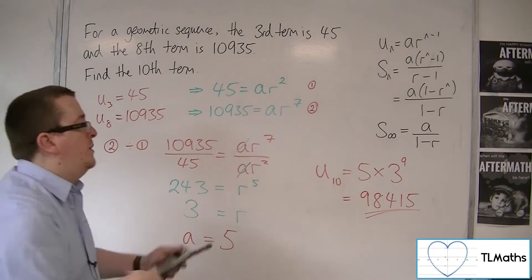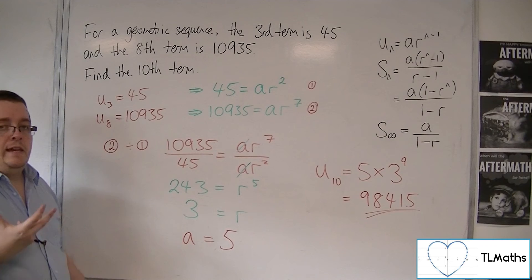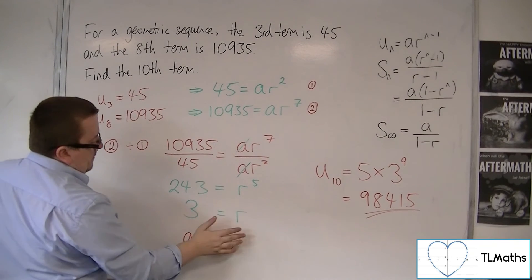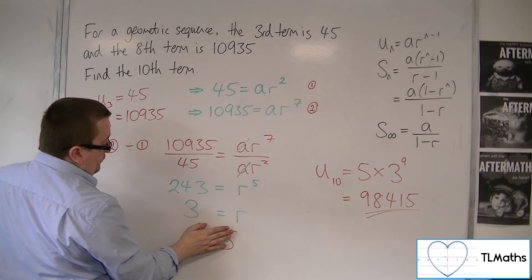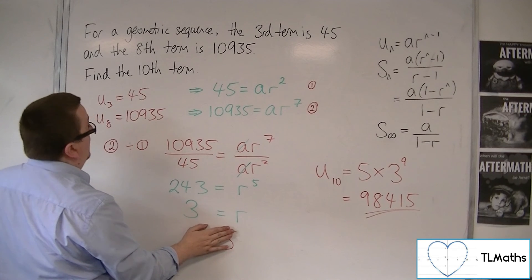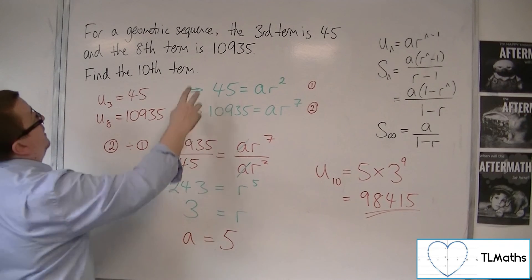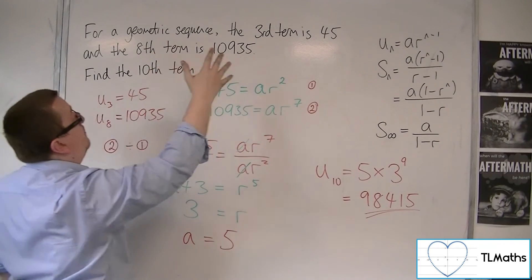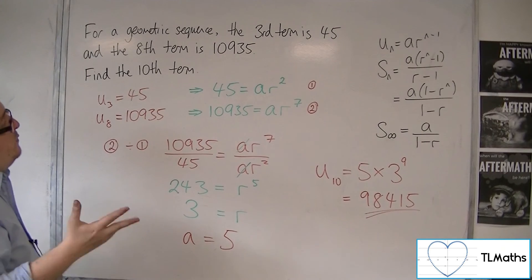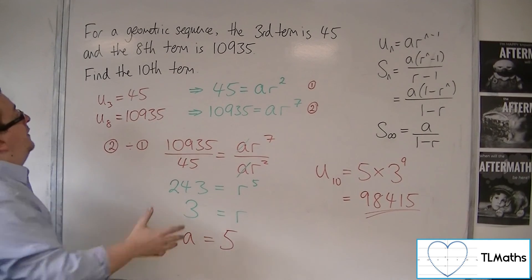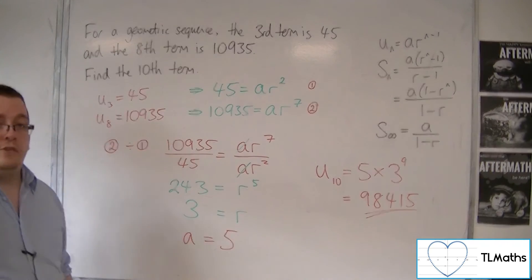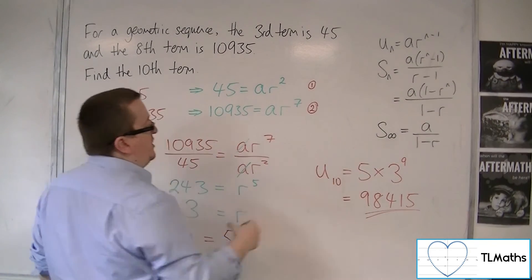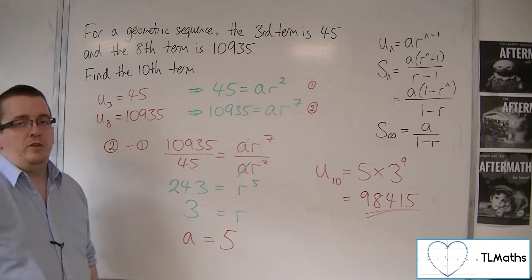Now, you might be wondering, did I need to find A in order to find the 10th term? Well, no, I don't. Because if I didn't find A and I just had R, then I could multiply this by 3 to get the 9th term. And then I could multiply that by 3 to get the 10th term. However, that wouldn't be a good method to use if we were finding the 100th term, for example. So it would make much more sense to use the formula to do that. So that's why I showed you doing it that way.